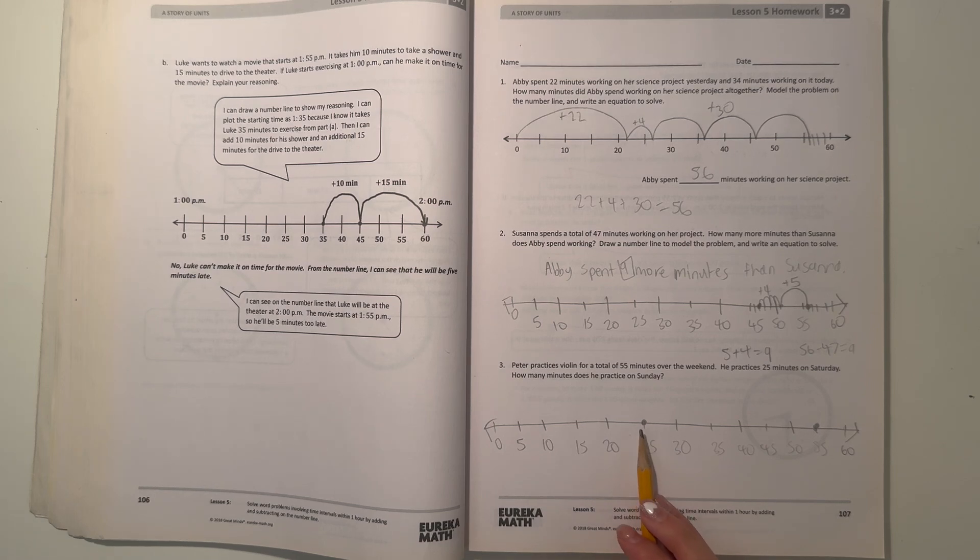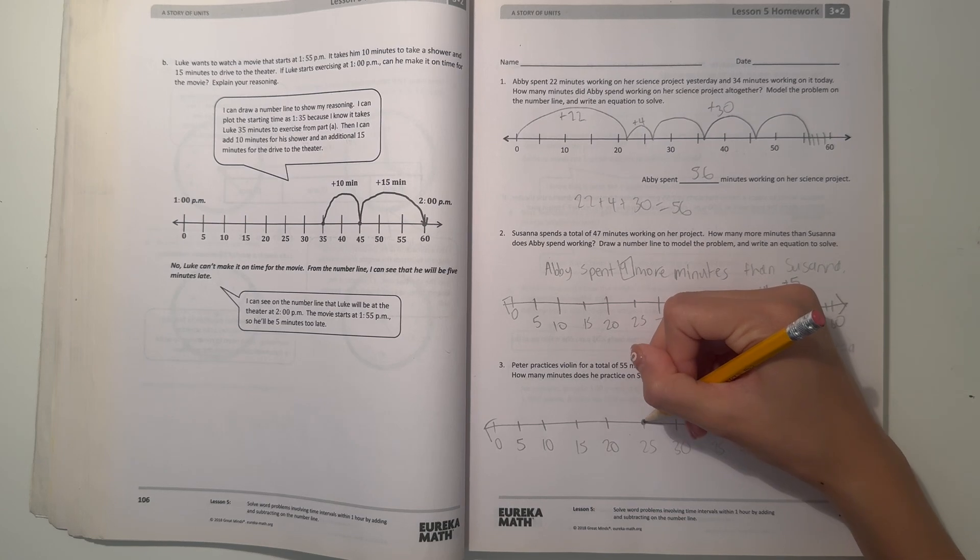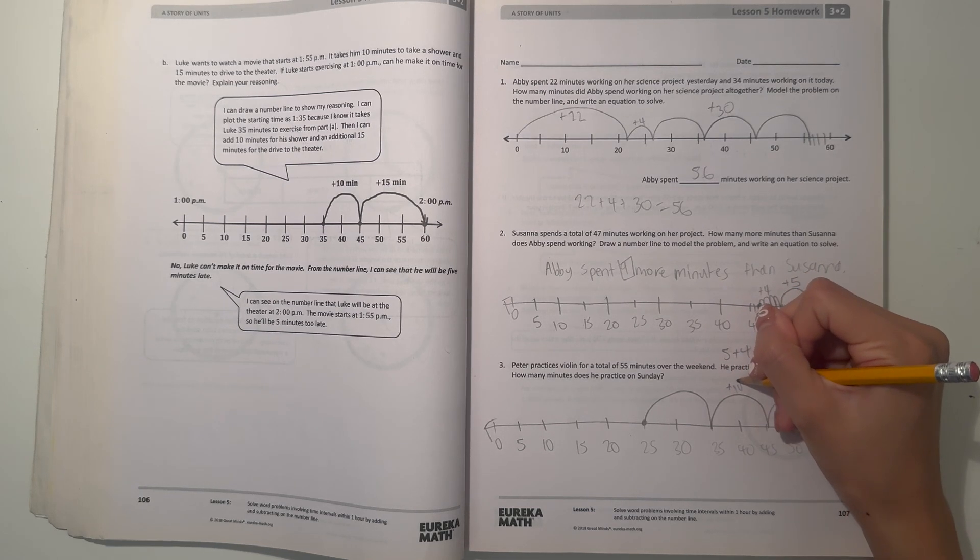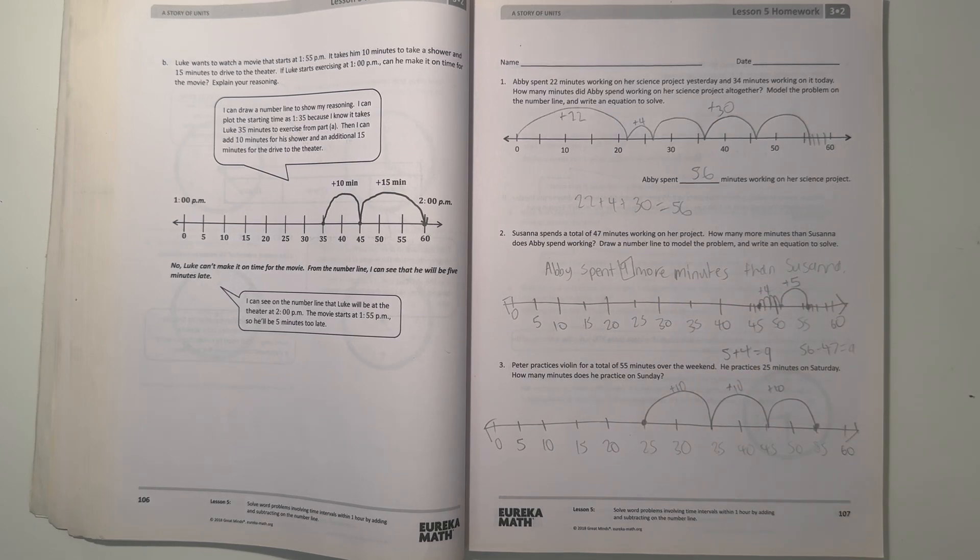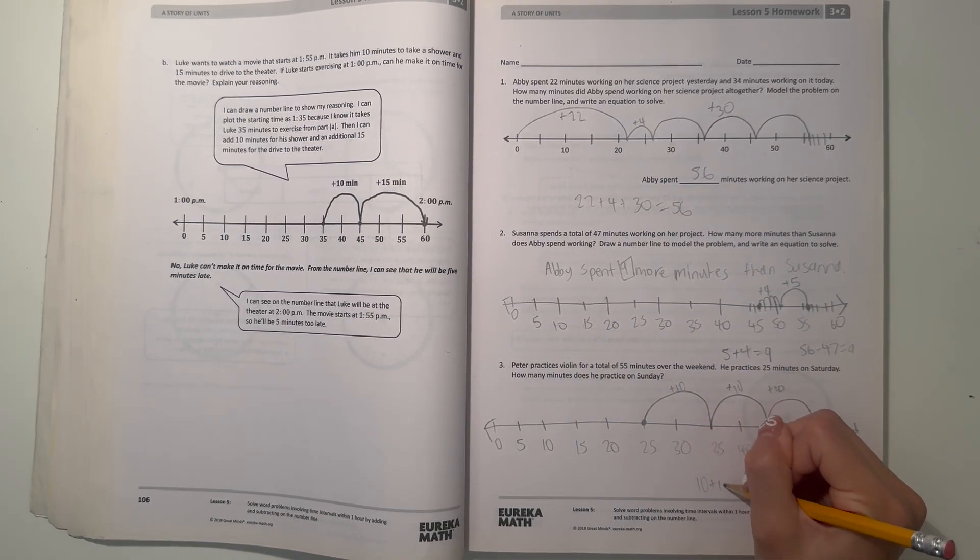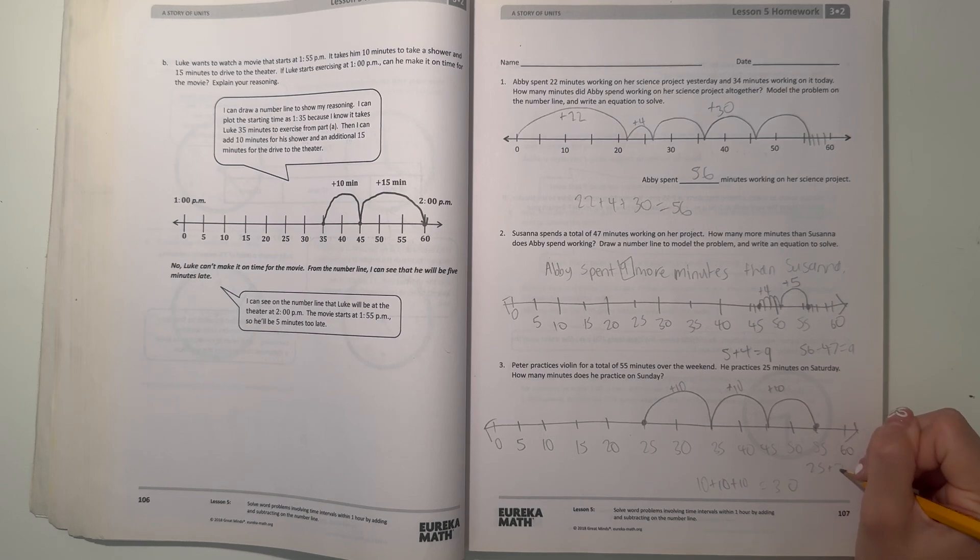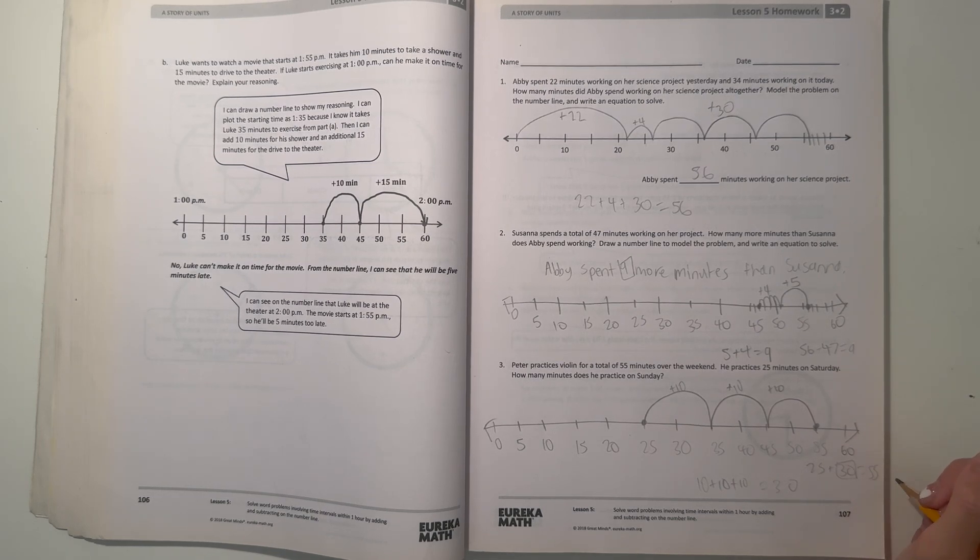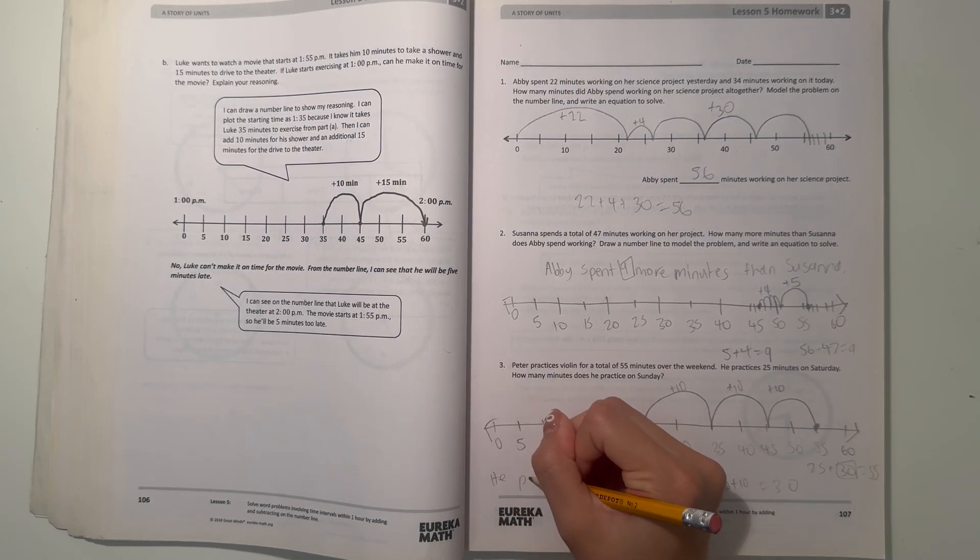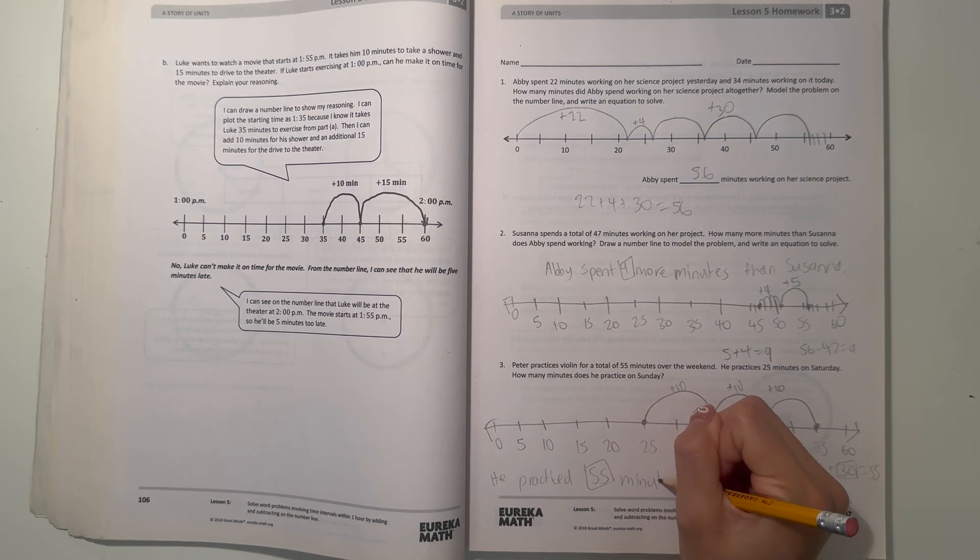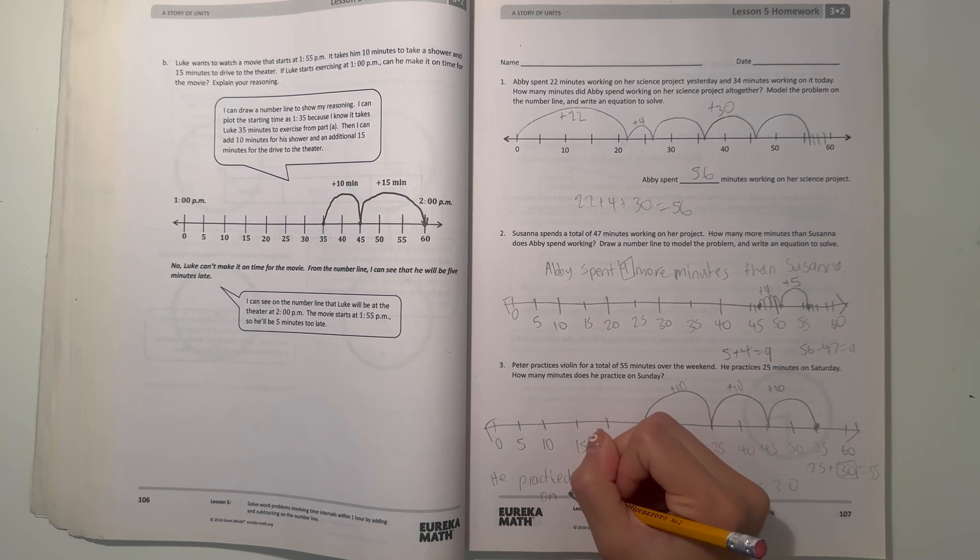So he reached 25, but then he ends up reaching 55. So we need to find out how much is in between these two numbers. So let's just hop by 10. So 25, 10, 20, and 30. That was plus 10, plus 10, and plus 10. So that means that 10 plus 10 plus 10 equals 30. So 25 plus 30 equals 55. So he practiced 55 minutes on Sunday.